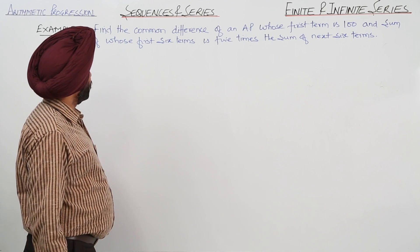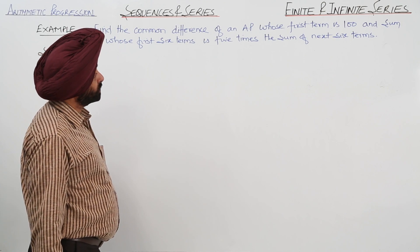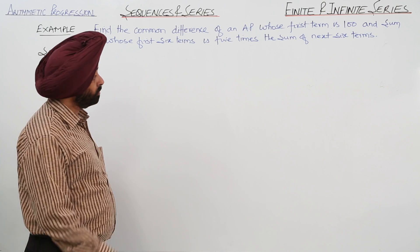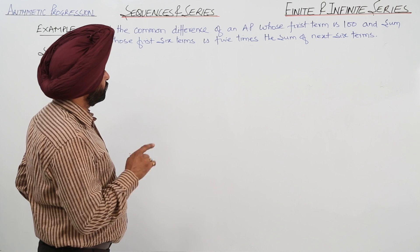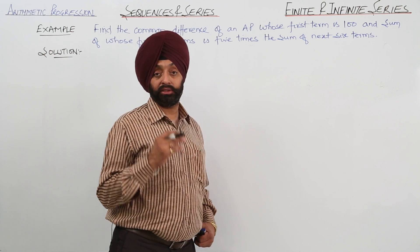The question is: find the common difference of an AP whose first term is 100, and the sum of whose first 6 terms is 5 times the sum of the next 6 terms.